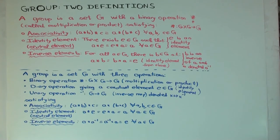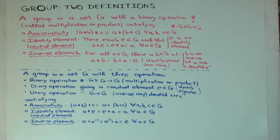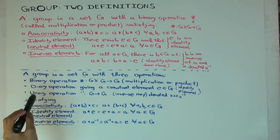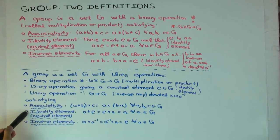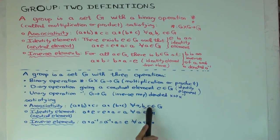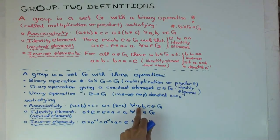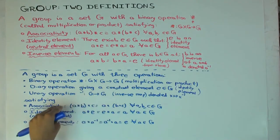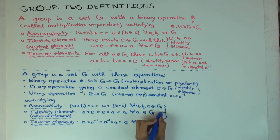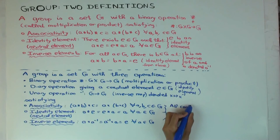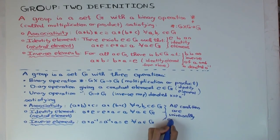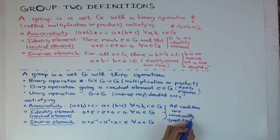The advantage of the second definition is that the conditions are now really simple. If I've already specified all four things, you just have to check the conditions. All the quantifiers are 'for all' — there is no 'there exists' in this part of the definition, whereas in the earlier definition there was 'there exists e' and 'there exists b'. That may not seem significant, but it's actually quite significant for a lot of things. We'll see in future videos exactly why the definitions are equivalent, and prove that the binary operation determines the identity and the inverse.